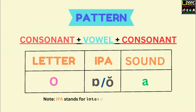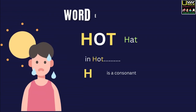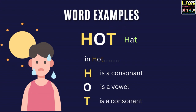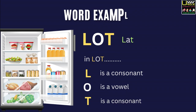Pattern: Consonant, Vowel, Consonant. Letter O, sound /ɒ/. Word examples. Dot. In dot, D is a consonant, O is a vowel, T is also a consonant. In short, S is a consonant, H is a consonant, O is a vowel, T is also a consonant. Lot. In lot, L is a consonant, O is a vowel, T is also a consonant.